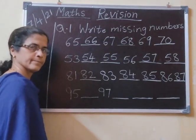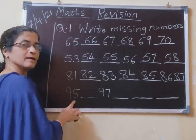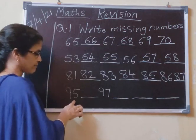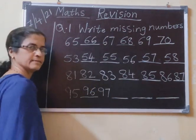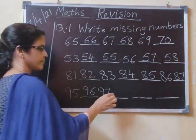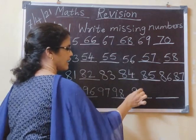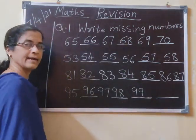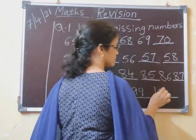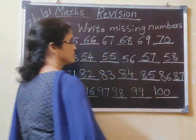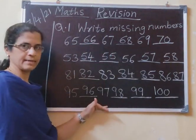Now next one: 95. After 95, what comes? 96, 97, 98, 99. After 99, 100. Understood all of you — we have all the missing numbers here.